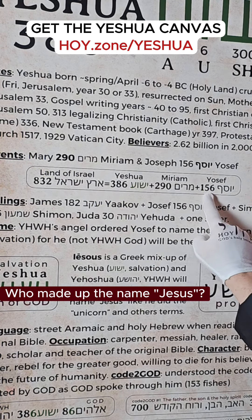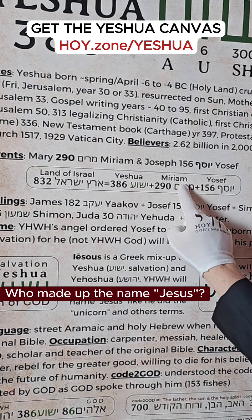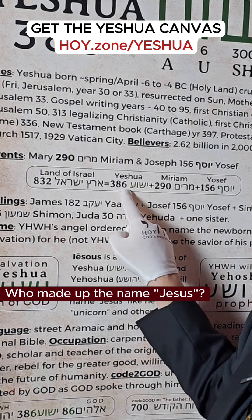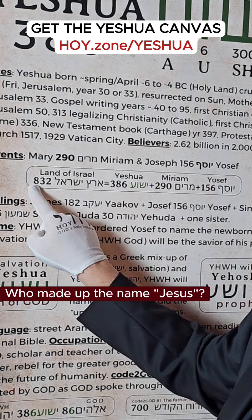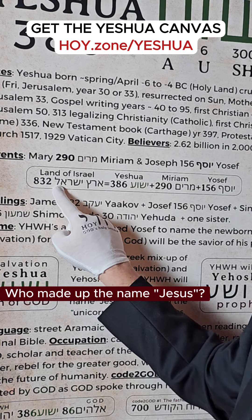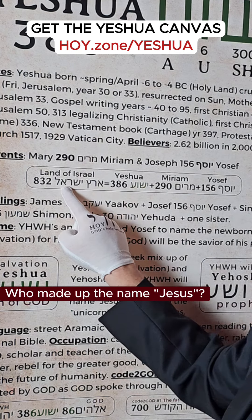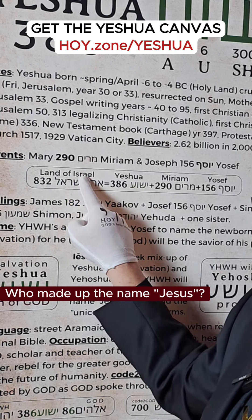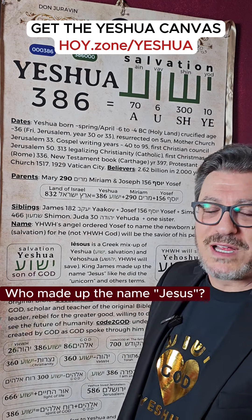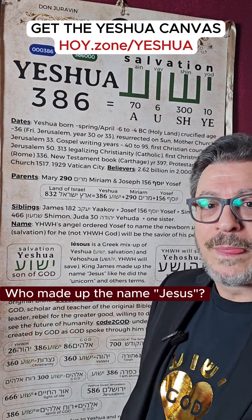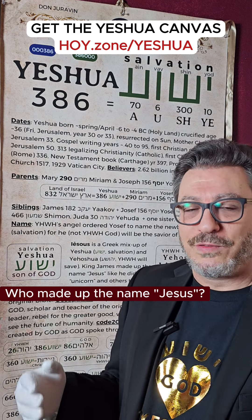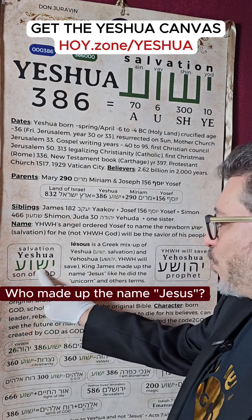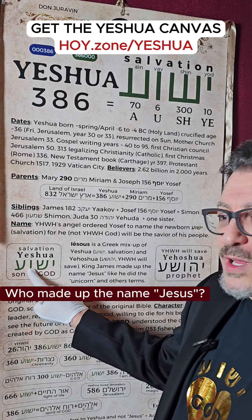Yosef is 156, Miriam — Mary — is 290, and Yeshua is 386. Together they equal 832, which corresponds to Eretz Yisrael, meaning 'the Land of Israel.' This is the first scientific proof that the New Testament is actually a continuation of the Old Testament.